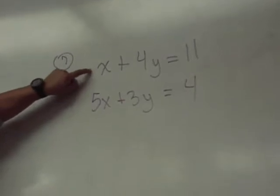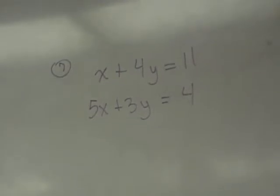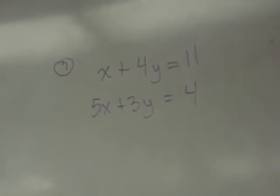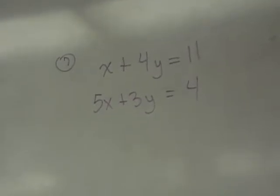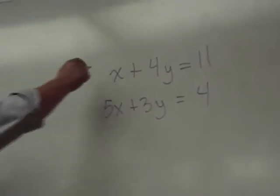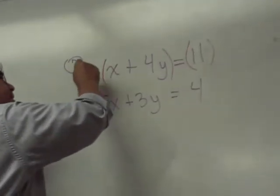Ideally, what would you like the coefficient here to be so that it will cancel? We need a negative five right there. And because we have a one, that's easy to do. I'm going to take this equation then and I'm going to multiply by negative five.